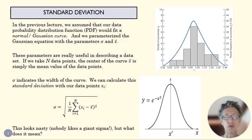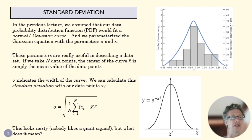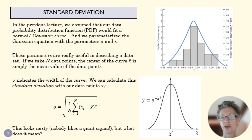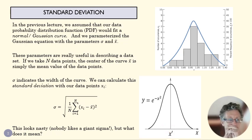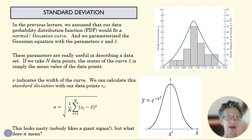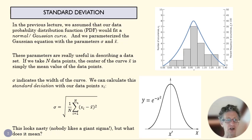We parameterized that Gaussian curve using the parameters sigma and x-bar, and those are really important values for quantifying random uncertainty. X-bar is just the mean of our data points — that's the central point of our Gaussian curve. Here it's x-prime, but that's essentially the same as x-bar. Once we know x-bar, we take all our data points and average them, and we can use that to calculate sigma, which is called our standard deviation.